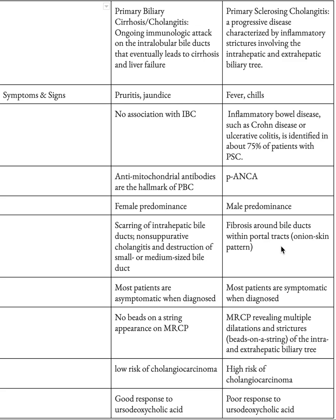Whereas in PSC you will see the onion skin pattern on liver biopsy — that is very important to remember. Many exam questions use the phrase 'onion skin pattern,' and the answer is primary sclerosing cholangitis.